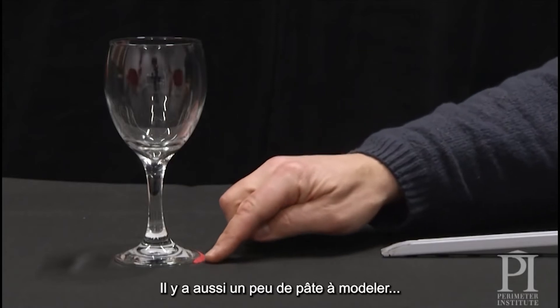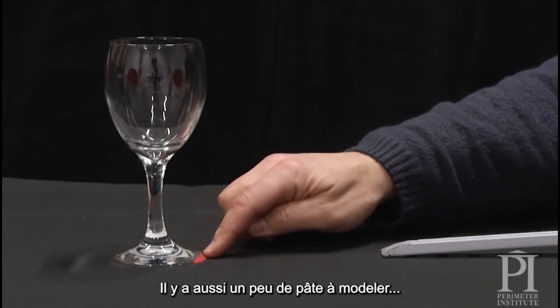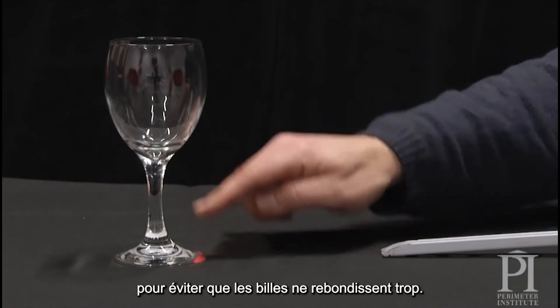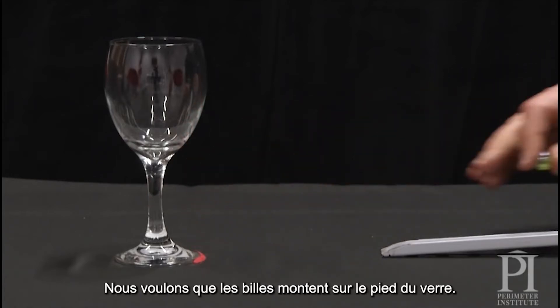You'll notice there's a little bit of modeling clay that we have to put right around the lip, just because the wine glass sits up off the table and we don't want to create too much of a bounce. We want the marbles to be able to roll up.